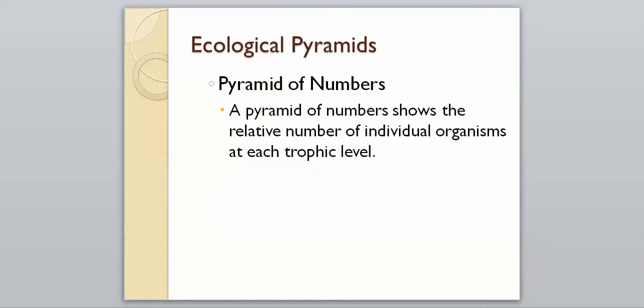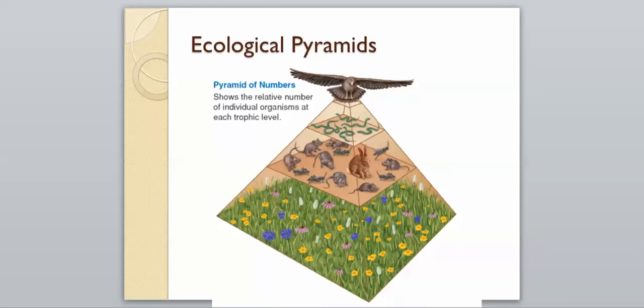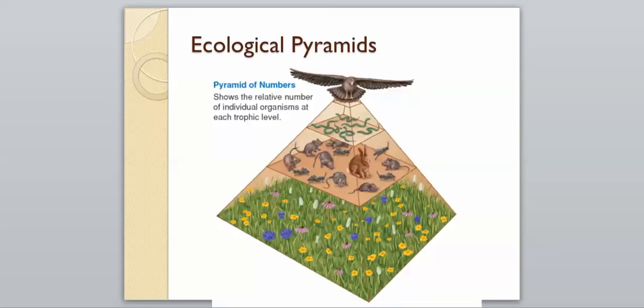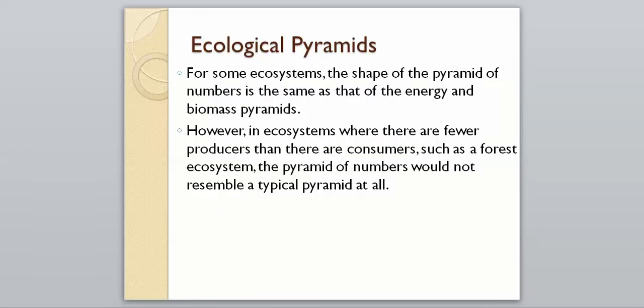Our last one is a pyramid of numbers, which shows the actual number of individual organisms at each trophic level. This shows exactly how many flowers we have, and then we have a bunch of rabbits, mice, and grasshoppers, then snakes, and then at the top we have one hawk. It literally just gives us the amount at each level. For some ecosystems, the shape of the pyramid of numbers is the same as that of energy and biomass pyramids. Sometimes it will be largest to smallest at the top. However, there are ecosystems where there are fewer producers than consumers, such as forest ecosystems, and the pyramid of numbers would not represent a typical pyramid at all. Sometimes this shape can change.